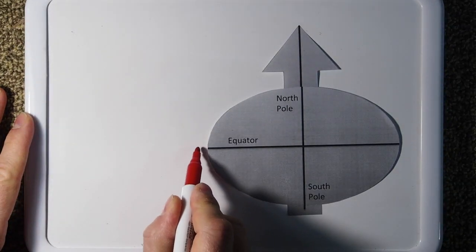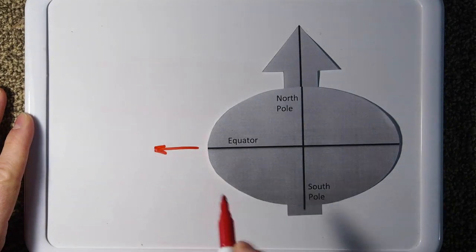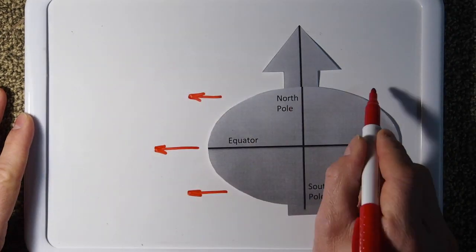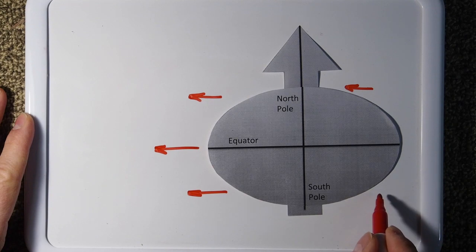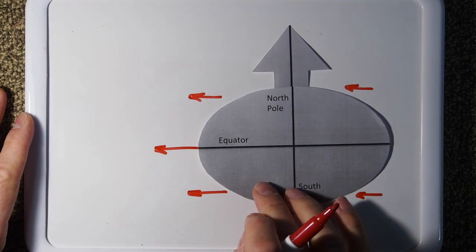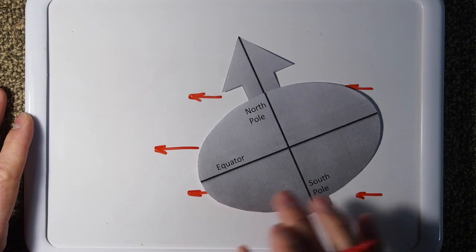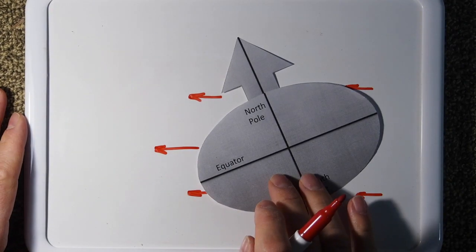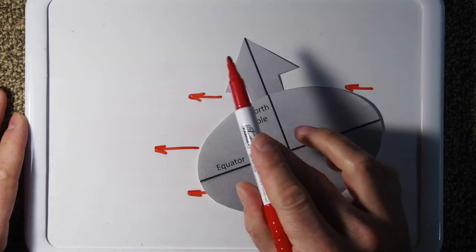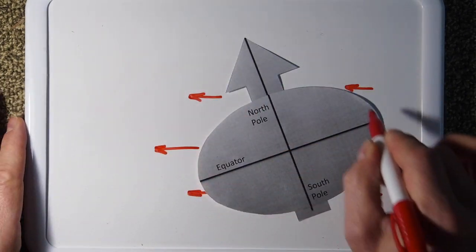If we take red as the direction of the Sun's gravity, we see that it's pulling on the Earth at all places. Now, not only is the Earth rotating, it's also tilted with regard to the direction of the Sun. And it's tilted. And we also have a bulge on the Earth.